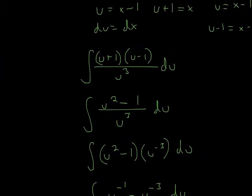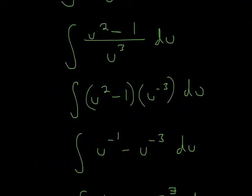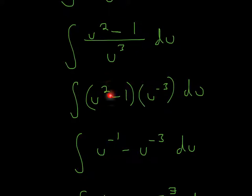Now we can simplify it even more. When you have something on the denominator and you want to bring it to the top, you can make it a negative exponent. So u to the negative 3rd power is the same as 1 over u cubed. Now we can multiply it across — when you multiply exponents, you simply add them. So negative 3 plus 2 is negative 1, and negative 1 times u to the negative 3 will just be negative u to the negative 3, du.